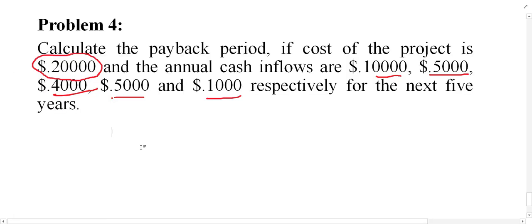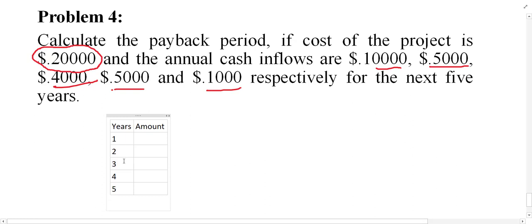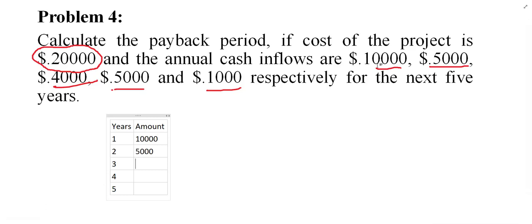Like the previous one, first of all you have to make your table. Mention the years in the first column and the amount in the second column. Depending on the number of years, make your rows: first year, second year, third year, fourth year, and so on. Now mention the inflows: inflow for the first year is 10,000, for the second year it is 5,000, for the third year it is 4,000, for the fourth year it is 5,000, and for the fifth year it is 1,000.